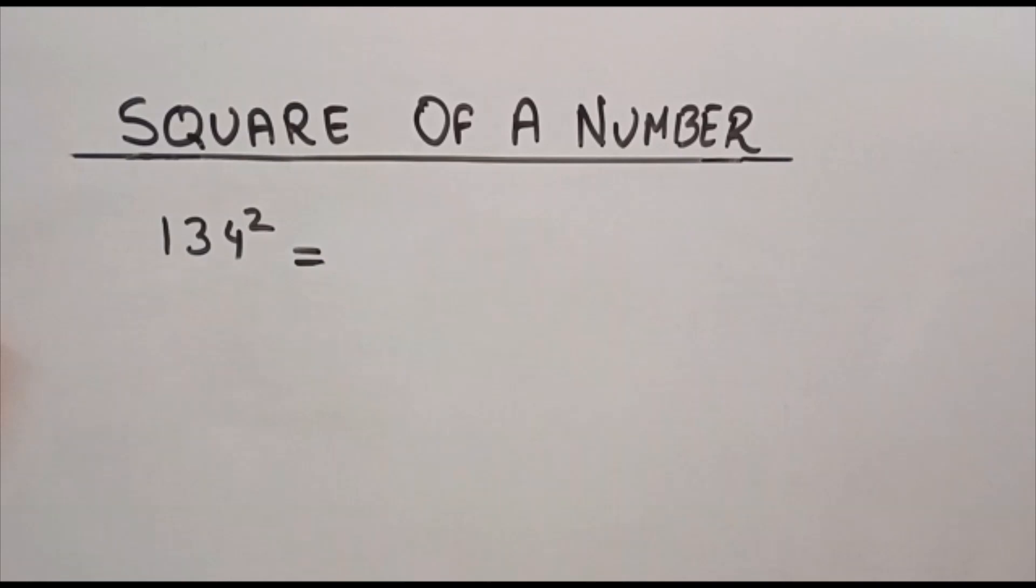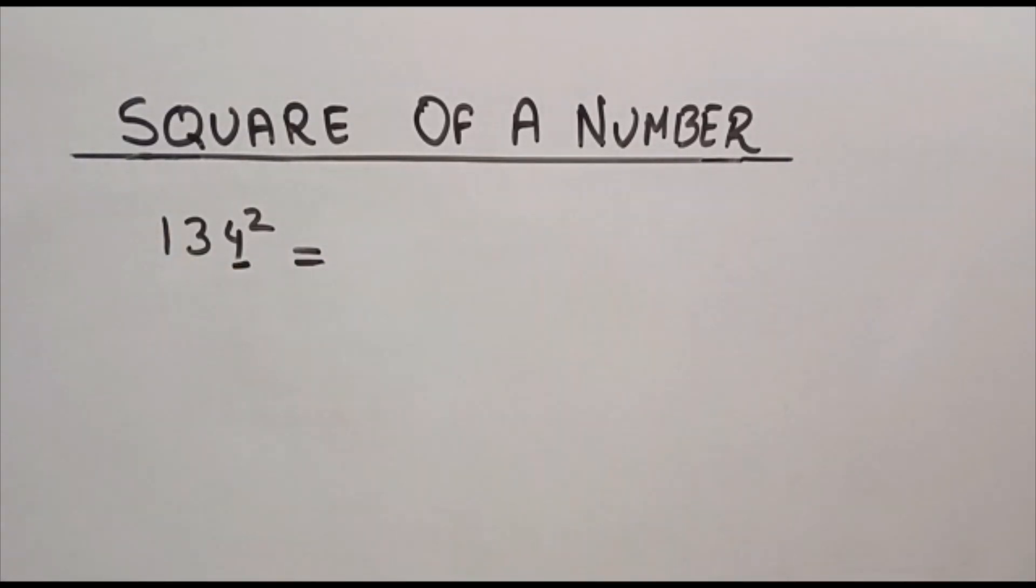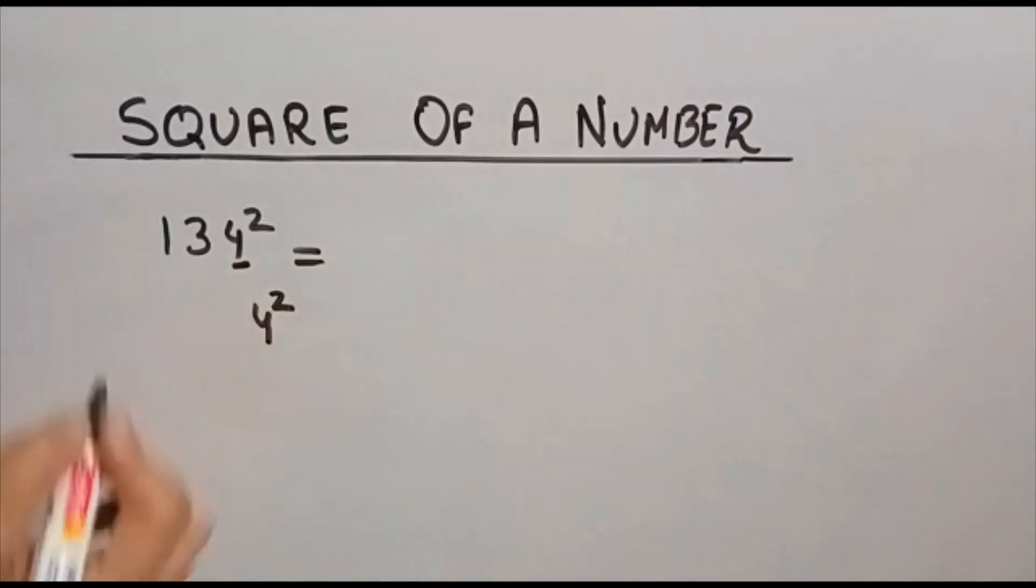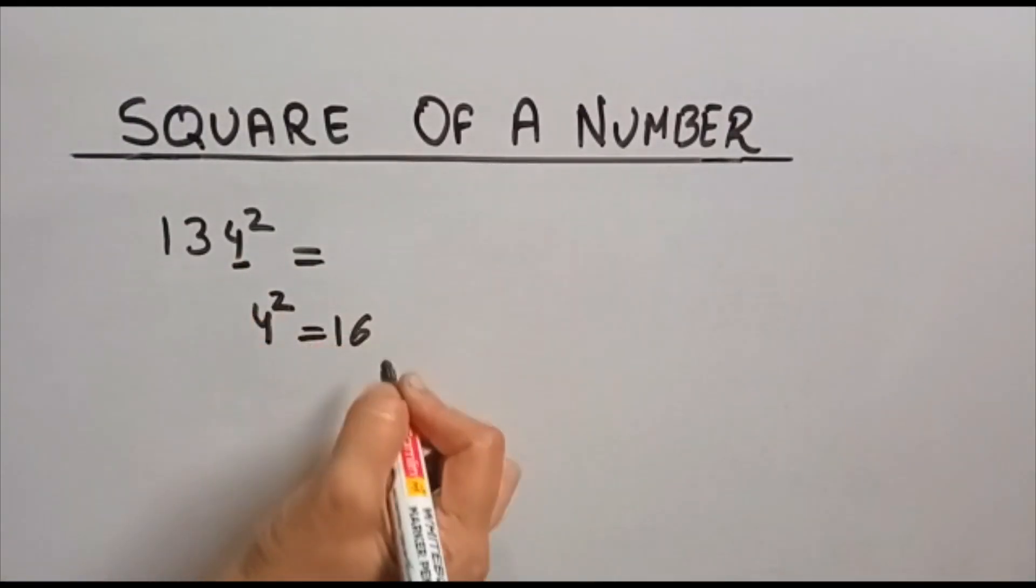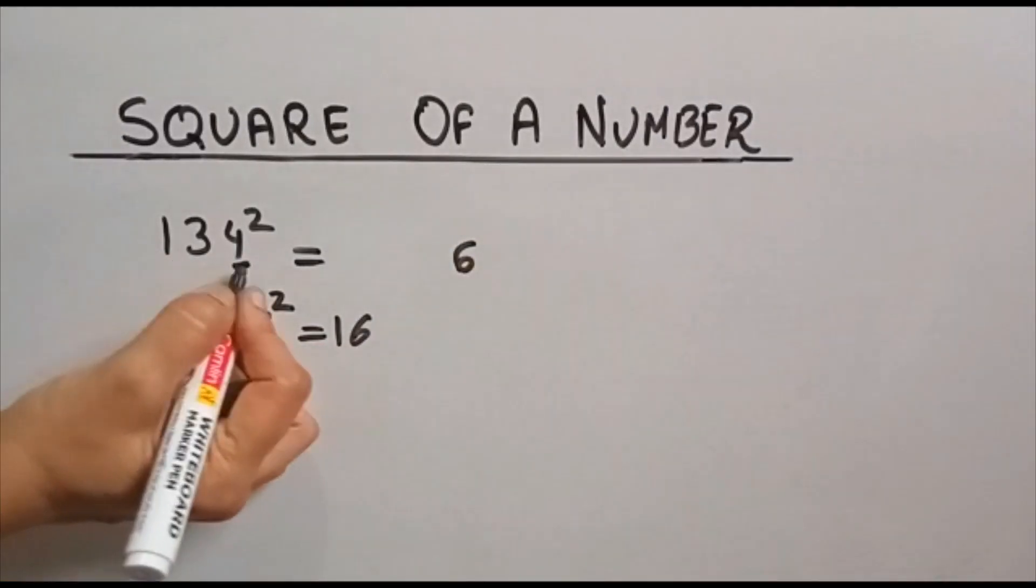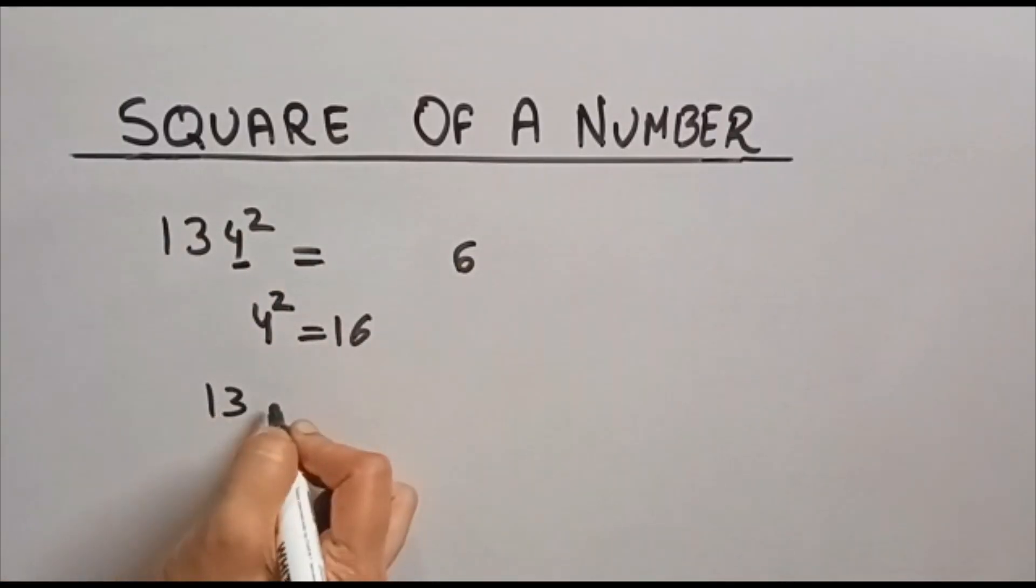134². Suppose we have to find square of this number in which unit place is not 5. What you are going to do here: first take square of this unit place which is 16. This 6 I am writing here. Now divide this 134 into 2 parts: first one is 13 and the second part is 4. Multiply these 2 and then multiply with 2, double this number. Then we are going to add this 1.